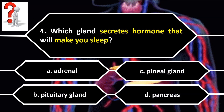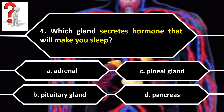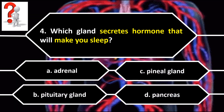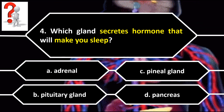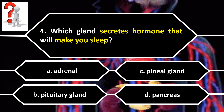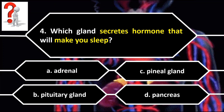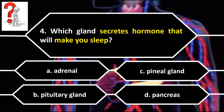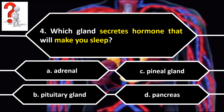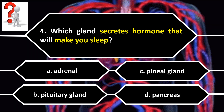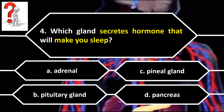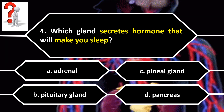Number 4. Which gland secretes a hormone that will make you sleep? A. Adrenal. B. Pituitary gland. C. Pineal gland. D. Pancreas.